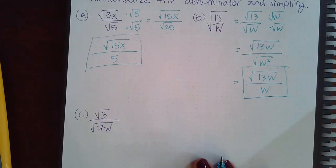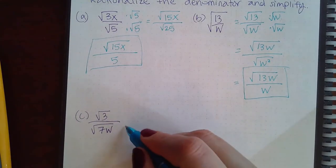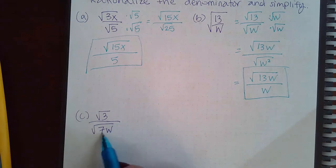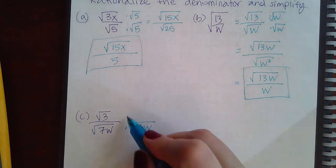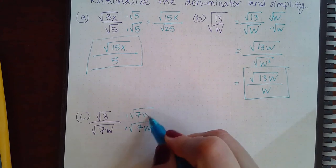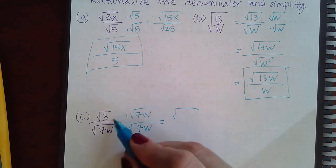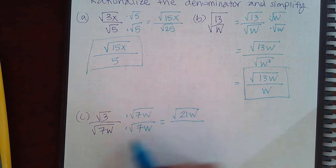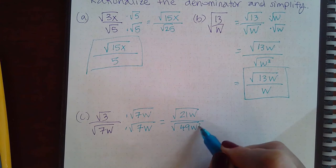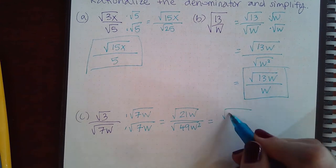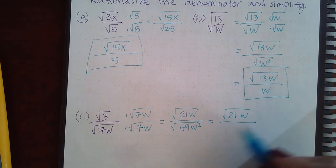Here we need, it's the square root of 7w, so we need another 7 and another w and do the same thing on the top. If I multiply these insides together I get 21w. If I multiply these insides together I get 49w squared. So I get square root of 21w and down here...